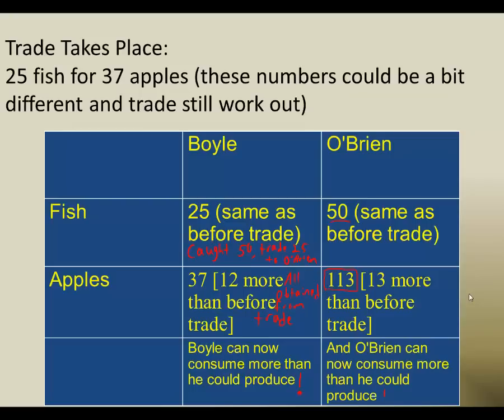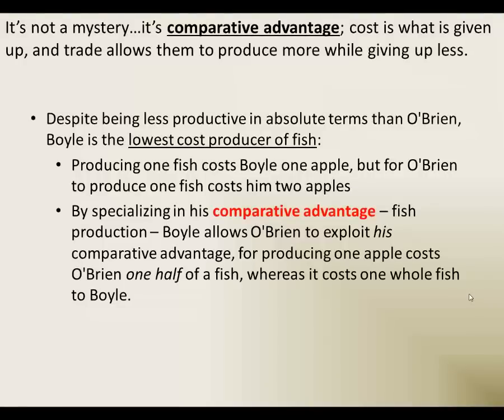If I set these numbers up a little bit differently, we could end up with both more fish and more apples. I just did these numbers like this so that the math worked out easy and you can follow along. If you want to see an example where we have more of both things, come talk to me in my office hours. So this slide explains why this trade worked out this way — you might want to rewind this video and watch it again. Thanks for watching. Bye.